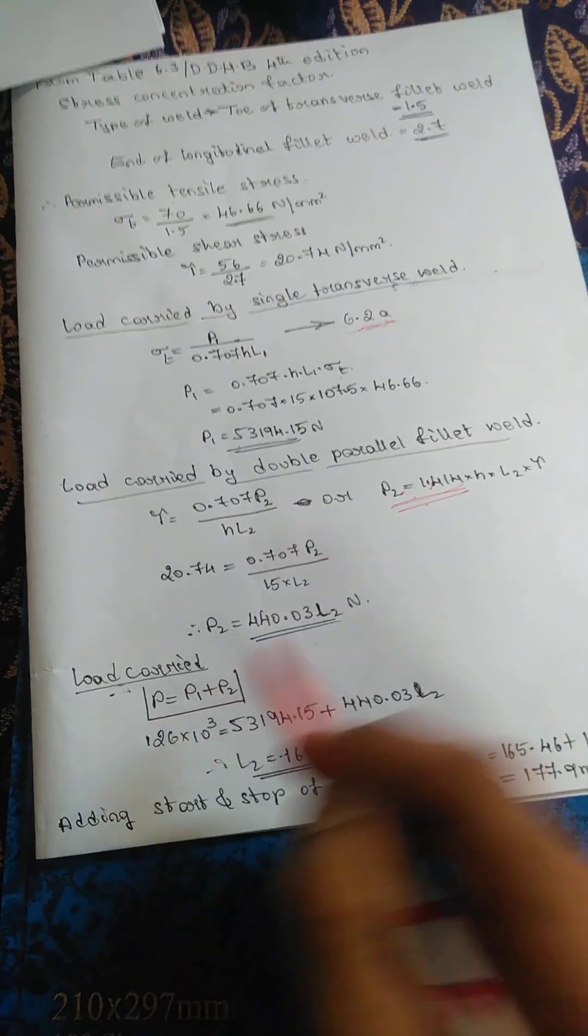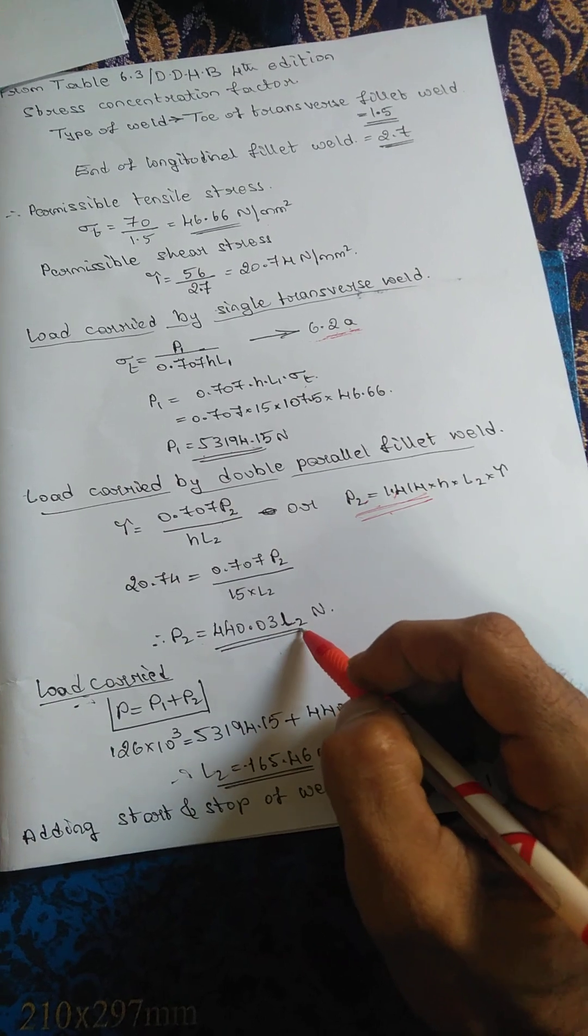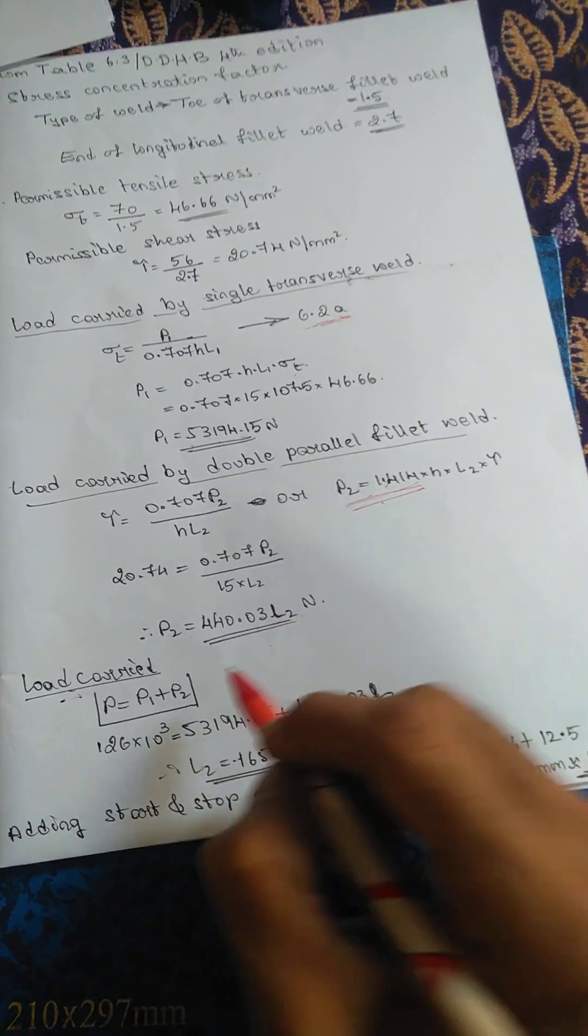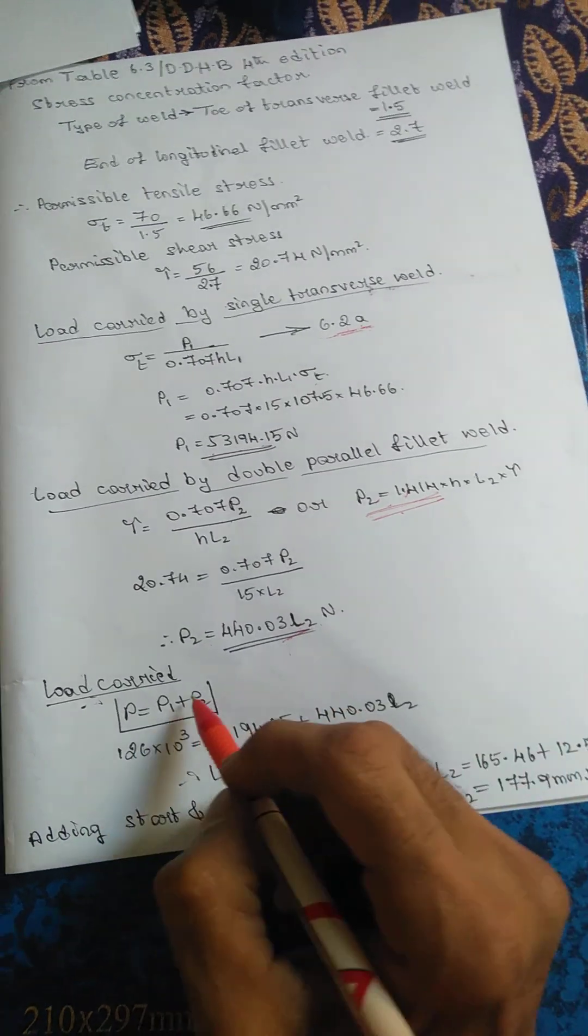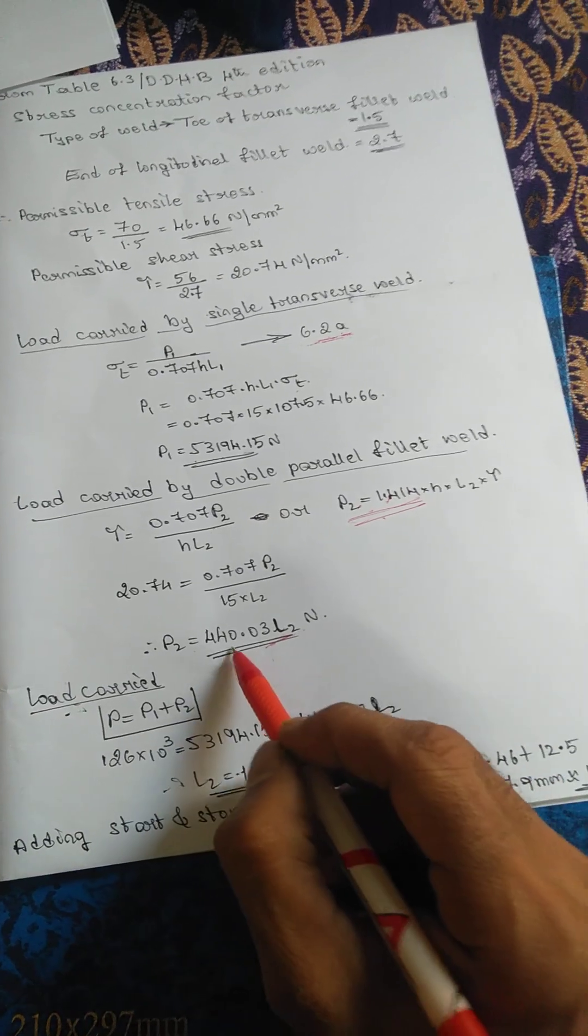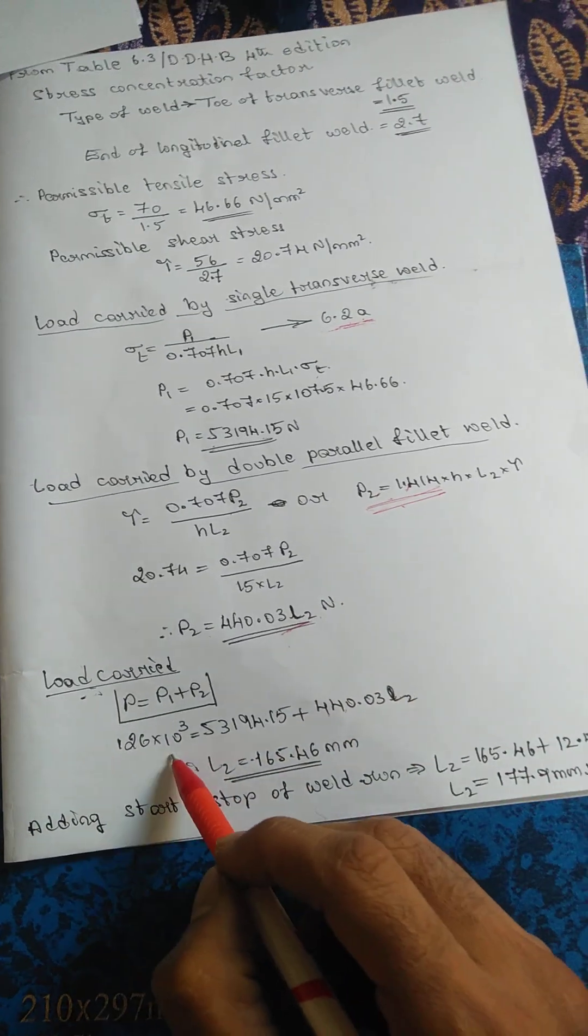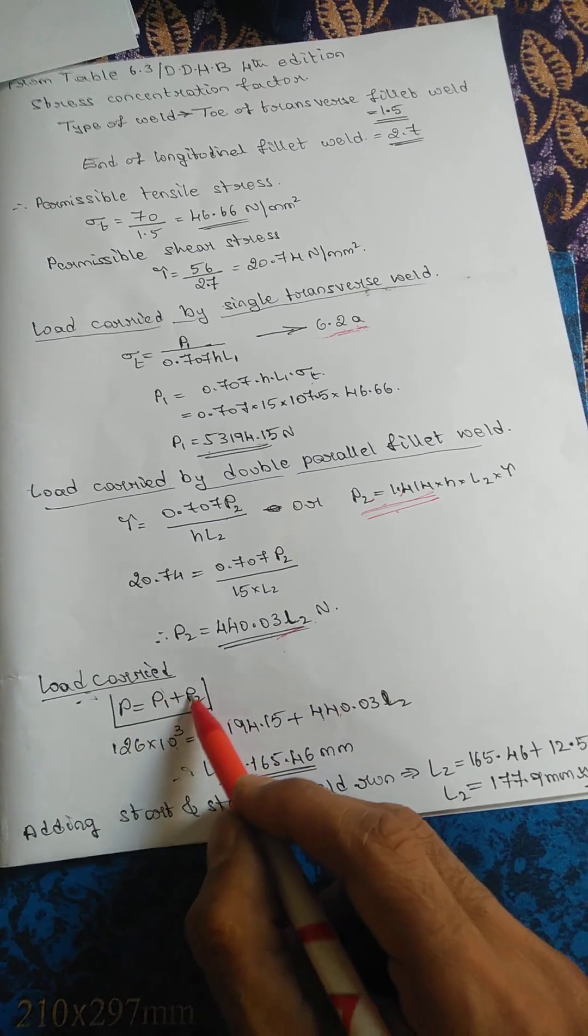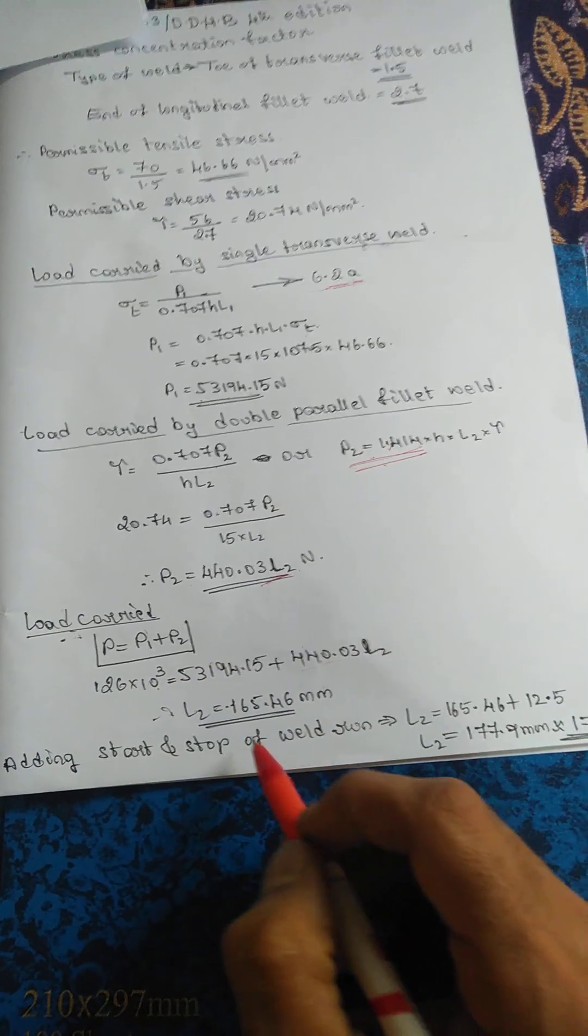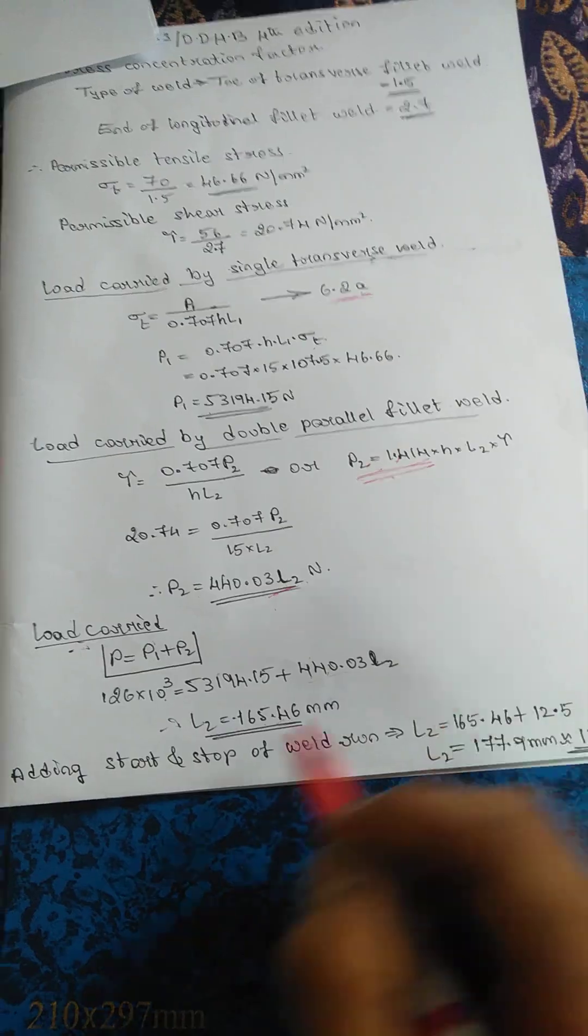Here L2 is not given, length L2 is not given. You have to keep it like this. Here we have P1, we have P, we have this one. So substitute: here, here, here - L2 is unknown, P is known, P1 is known, P2 value with L2. So L2 is unknown. Calculate this, L2 will get as 165.46.